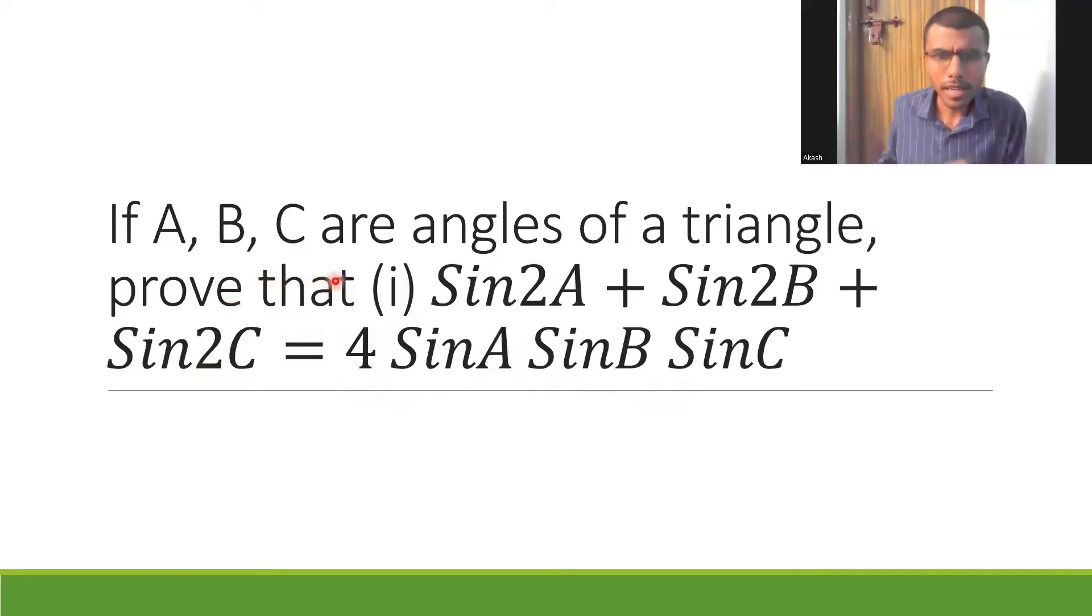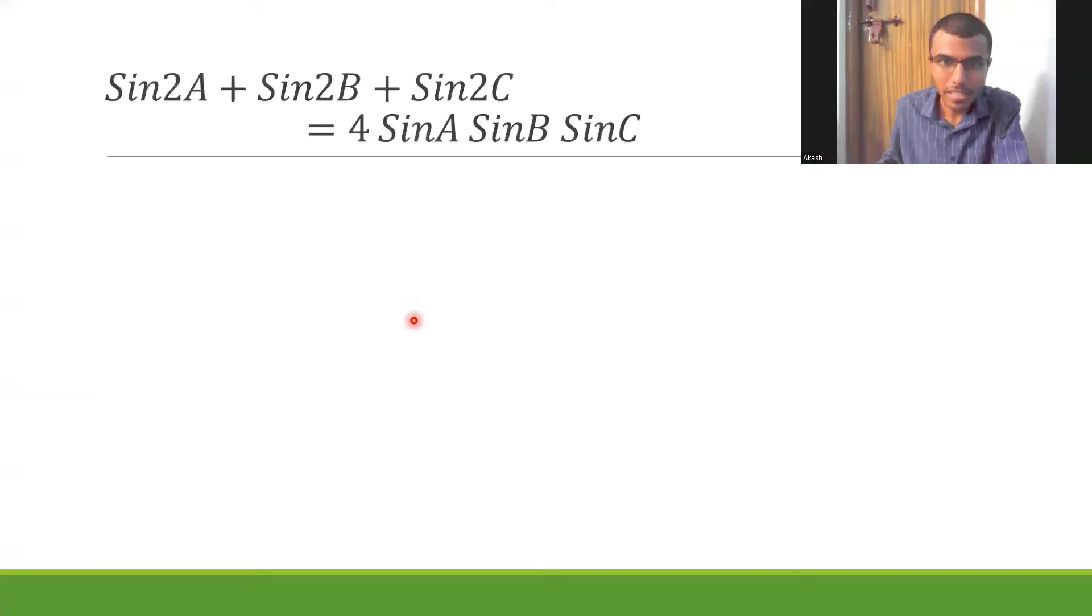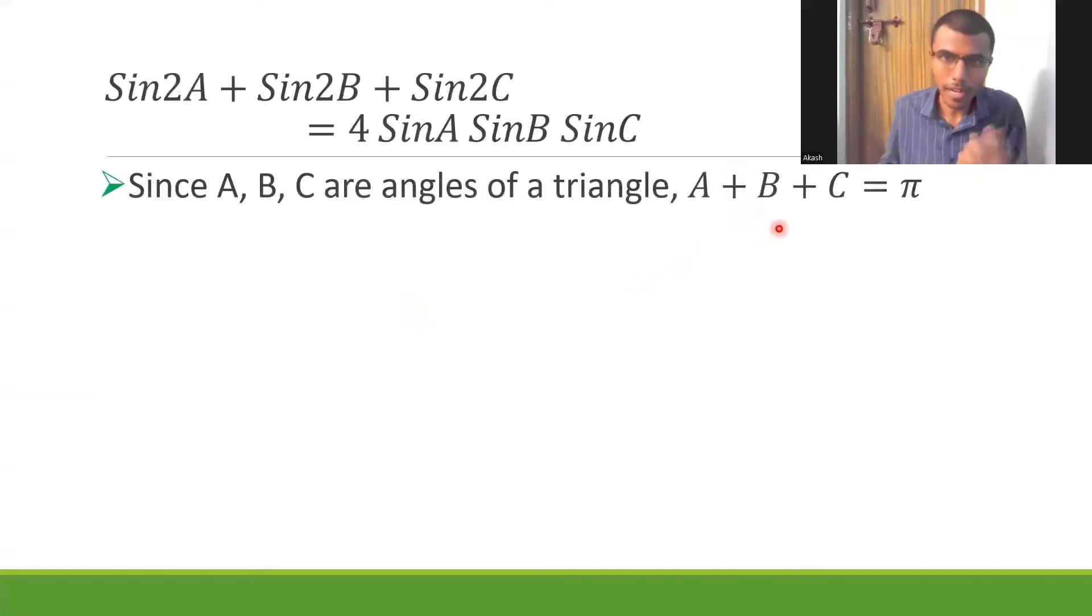Now since A, B, C are angles of a triangle, what can you think? A + B + C is π, okay, A + B + C is π, 180 degrees, because sum of angles in a triangle is 180 degrees.